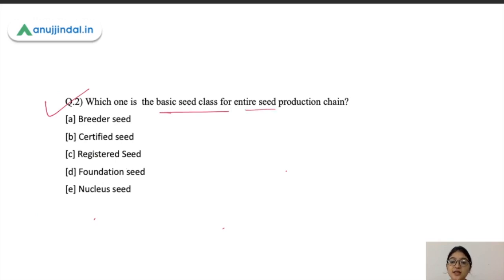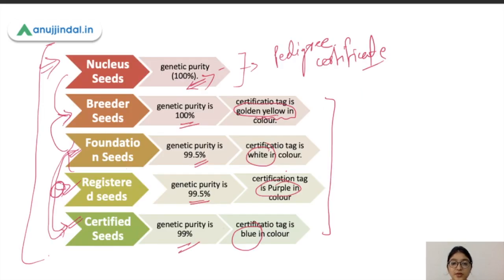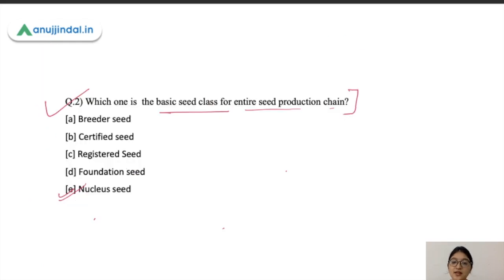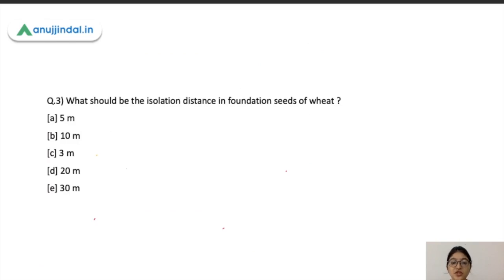The next question: which is the basic seed class for the entire seed production chain? As seen in the previous slide, nuclear seeds are the foundation of the entire seed production chain. Foundation seeds is itself a class, but nuclear seeds are what set the foundation — so nuclear seed is the basic seed class for the entire seed production chain.